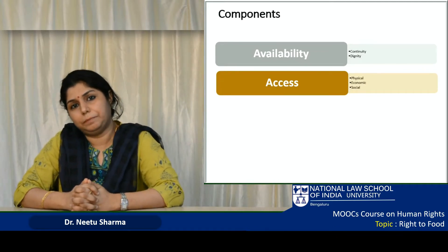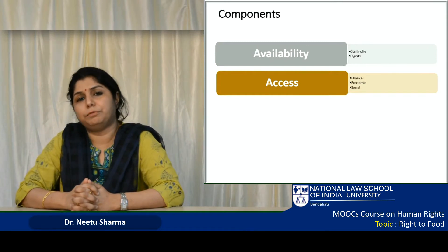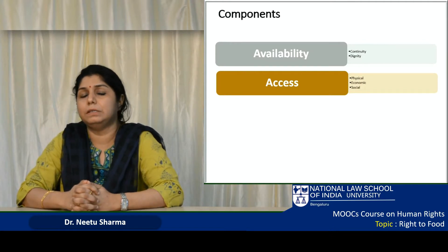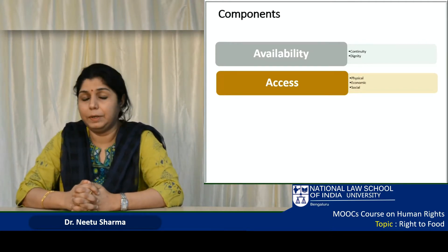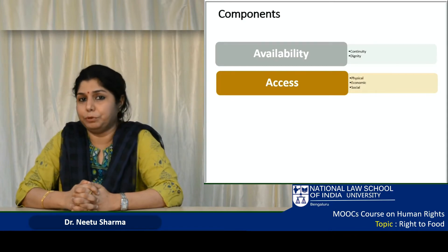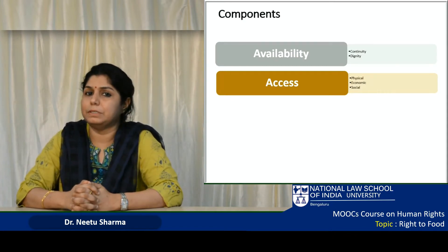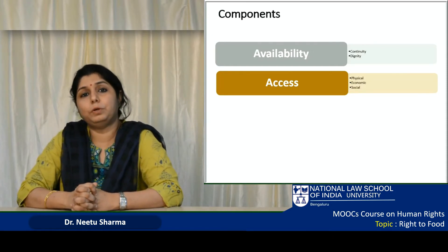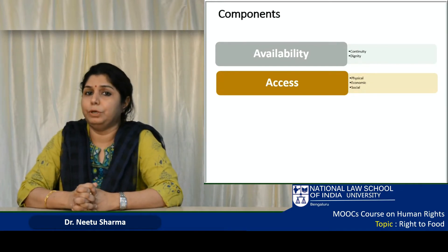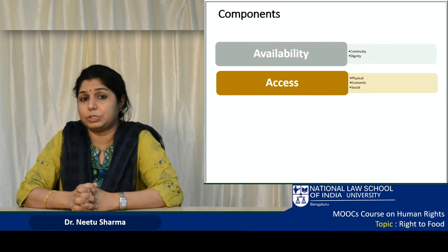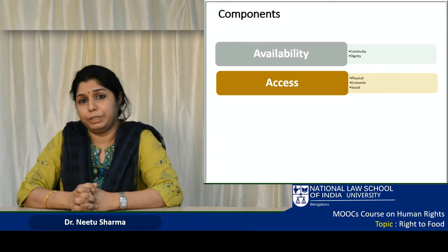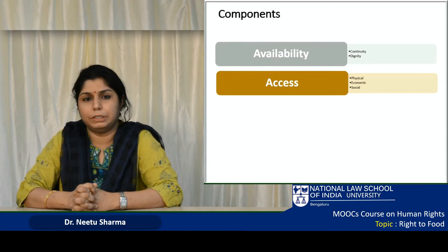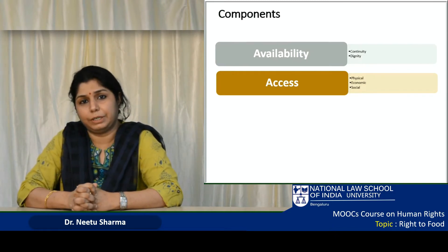Talking about availability, food and food grains should be available at all times — that means there should be enough production by the country and various states. That also means that if states and countries are not producing enough food, they should be able to import enough food or states should be able to distribute food grains and various other commodities related to food provision to all states and to the entire country.